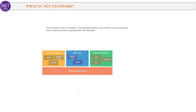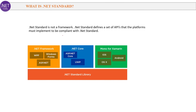Next question: What is .NET Standard? .NET Standard is not a framework. It defines a set of APIs that a platform must implement to be compliant with .NET Standard — meaning it is a set of rules or libraries. If any framework follows these rules, it is compliant with .NET Standard. As shown in the diagram, .NET Framework, .NET Core and Mono for Xamarin all follow the .NET Standard rules.